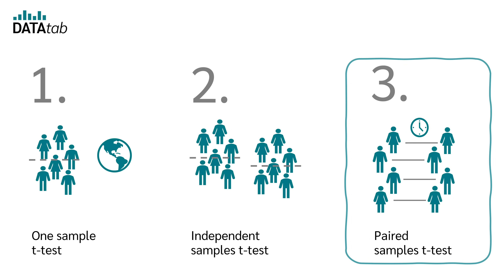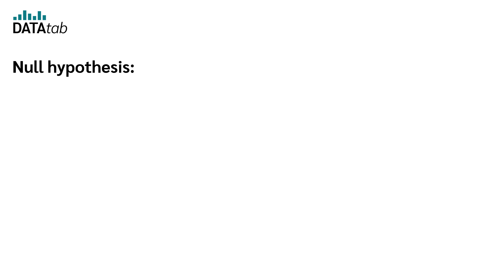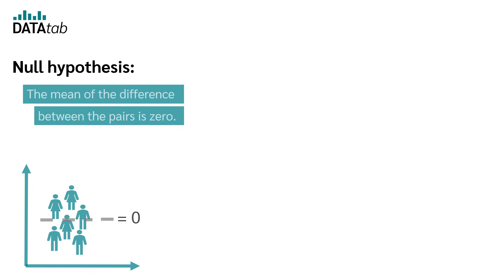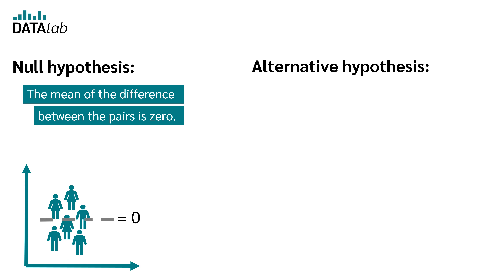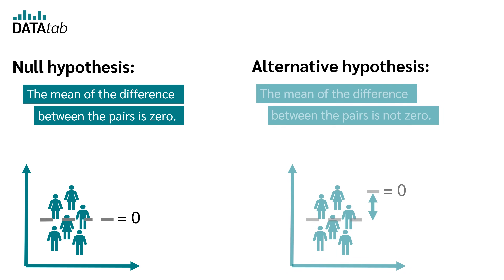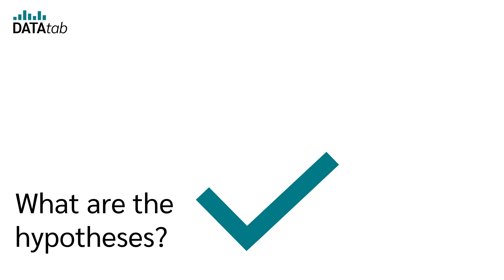For the paired samples t-test, the null hypothesis is that the mean of the difference between the pairs is zero, and the alternative hypothesis is that the mean of the difference between the pairs is not zero.